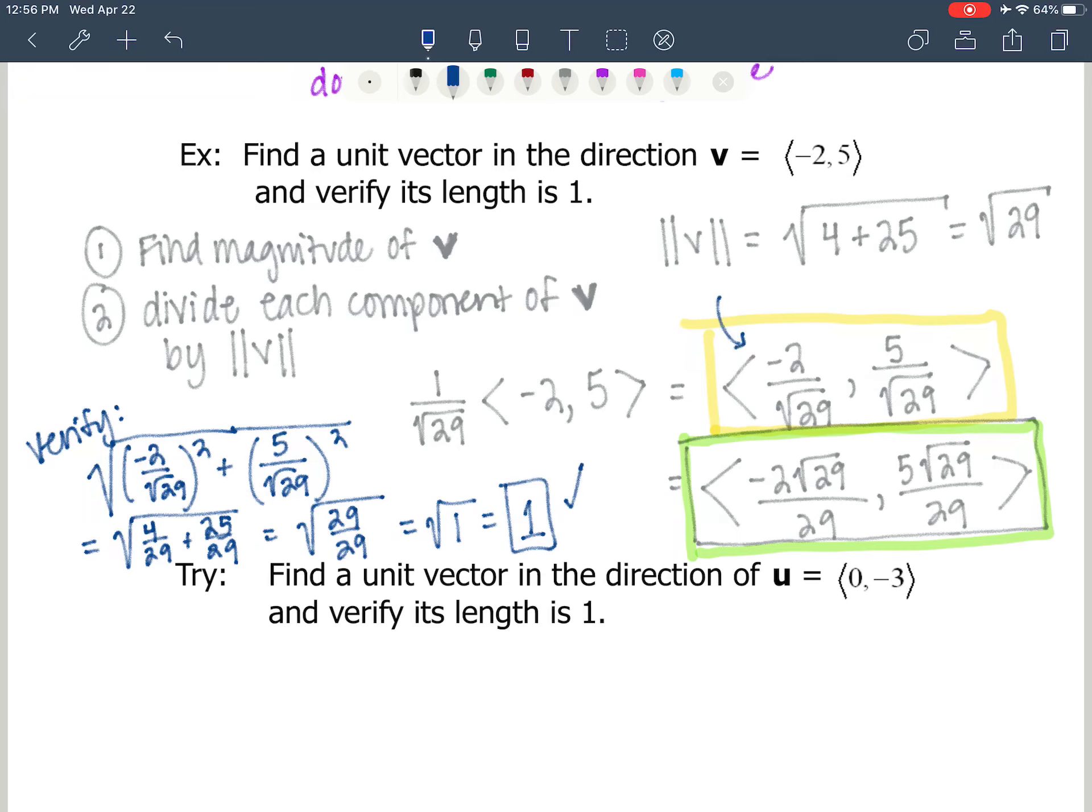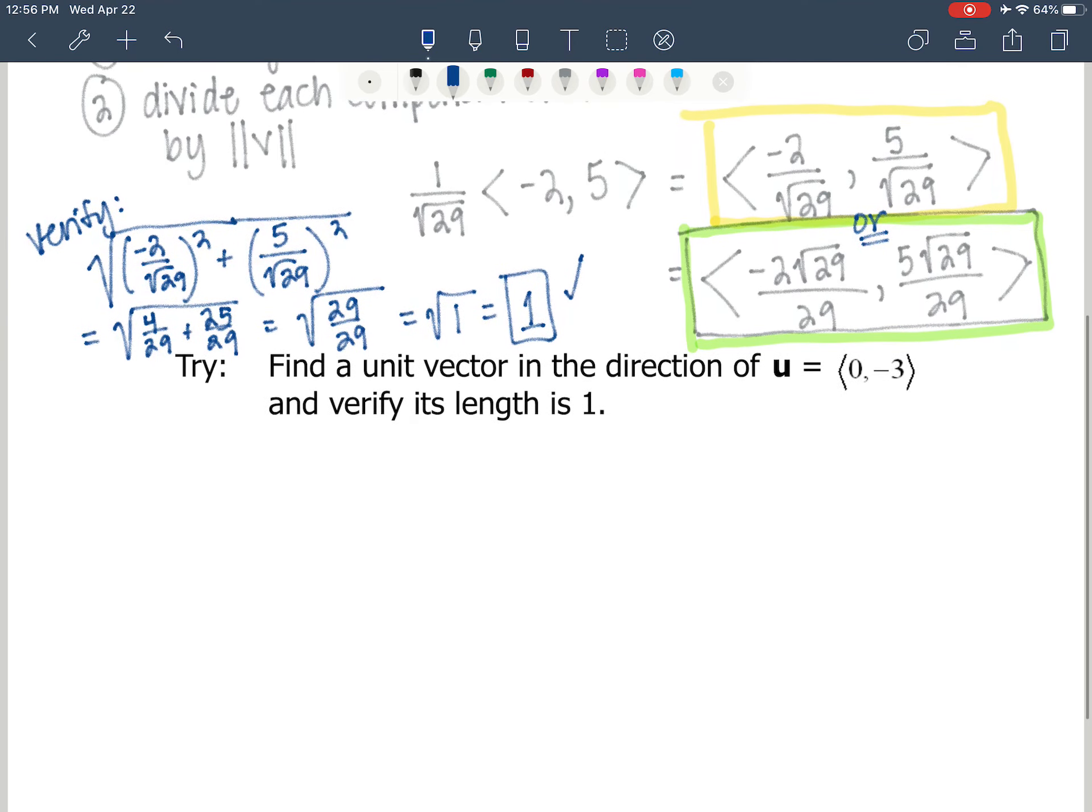So this is an answer for sure, this yellow boxed answer or the rationalized answer. Okay, you're going to go ahead and try, go through this same process, step 1, step 2, and then you can verify and make sure that you've got a vector of 1.